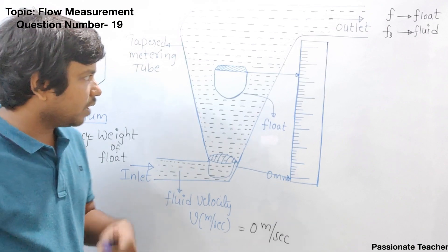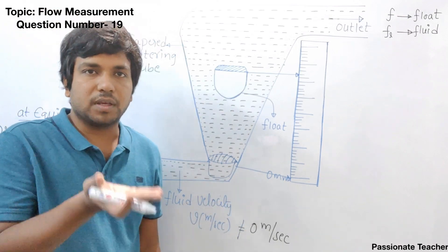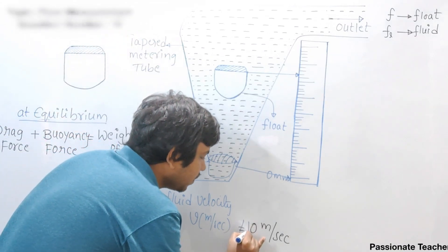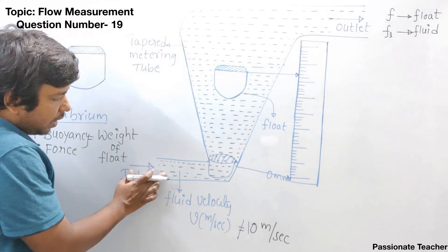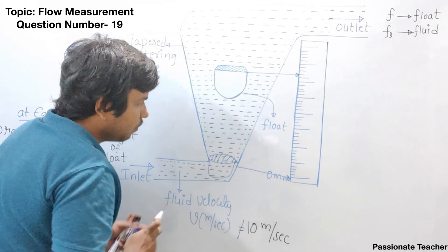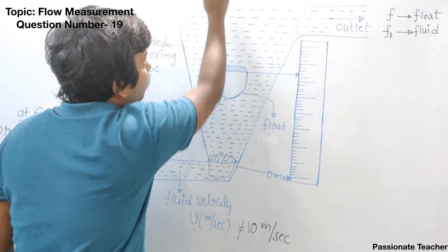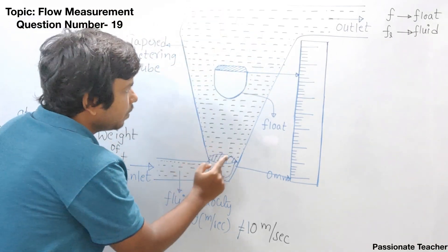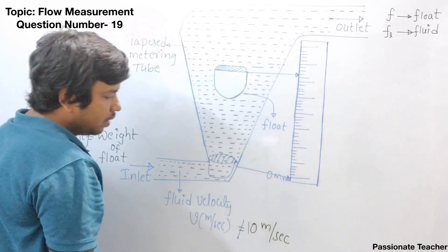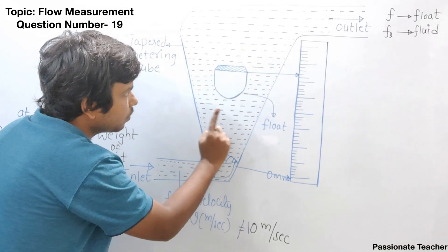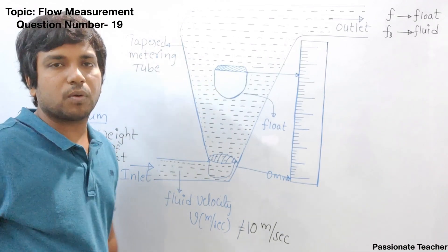Now, suppose the velocity of the fluid is not equal to zero — for example, 10 meters per second. When the fluid velocity increases, the float will move vertically upward with rotation. Let us say after traveling it stops exactly at a certain point. That height will be calibrated or converted into velocity, as the float rotates upward or downward — this is what the device called a rotometer does.